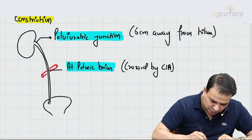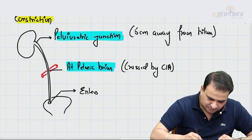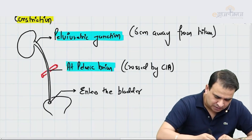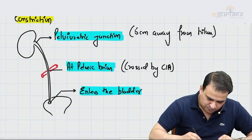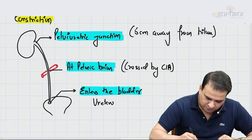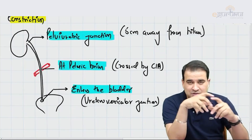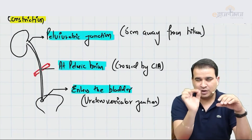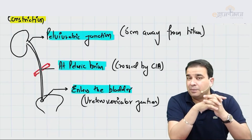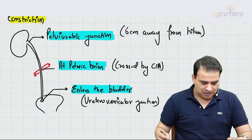The third constriction is when the ureter enters the bladder — that is called the ureterovesical junction. So the three important constrictions are: the pelviureteric junction, at the pelvic brim where it crosses the common iliac artery, and third, the ureterovesical junction where it enters the bladder from the posterior surface.